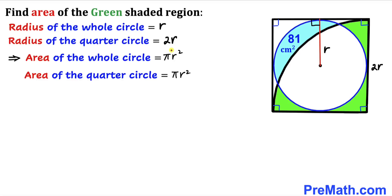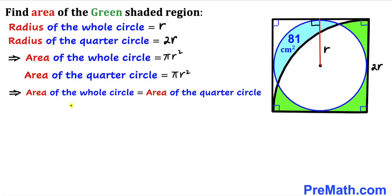We can observe that the area of the whole circle is π r squared and the area of the quarter circle is π r squared as well. Therefore we conclude that the area of the whole circle equals the area of the quarter circle.